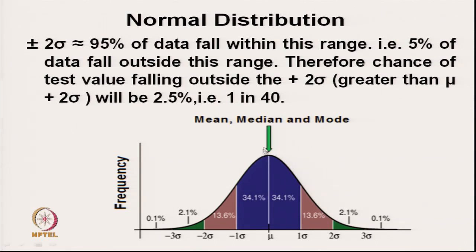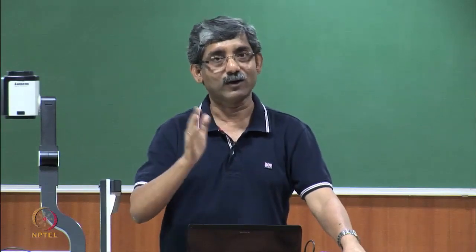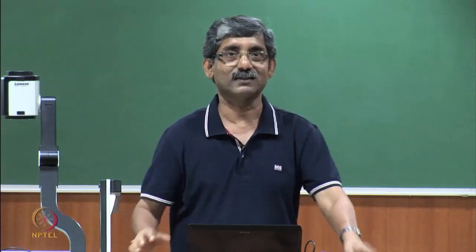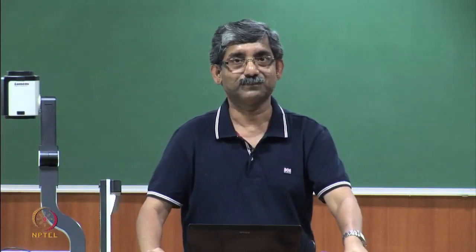In one side it is 2.5% — so that means 1 in every 40 data is in the larger size. If we take readings of 40 yarn counts and assume normal distribution, 1 in 40 readings will be more than the mean value plus 2 times the standard deviation. Suppose the mean value is 10 and standard deviation is 1 — then 10 plus 2 multiplied by 1 equals 12 — so 1 out of 40 readings will be more than 12, and similarly 1 out of 40 readings will be less than 8.